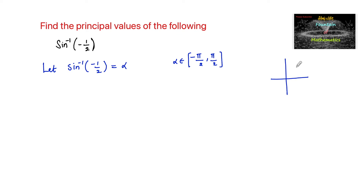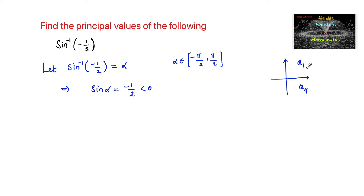So alpha is either in the first quadrant or in the fourth quadrant. This implies sin alpha is equal to minus 1 by 2, which is negative. Since sin is negative in the fourth quadrant and positive in the first quadrant, we must consider the angle in the fourth quadrant.